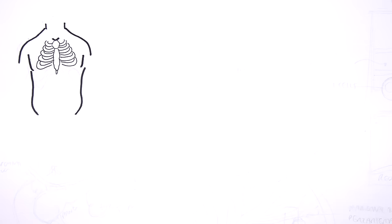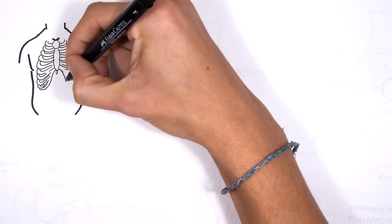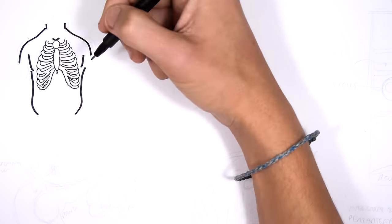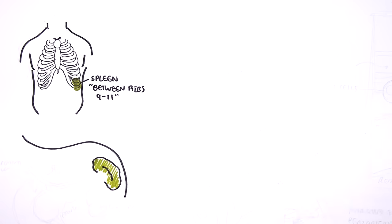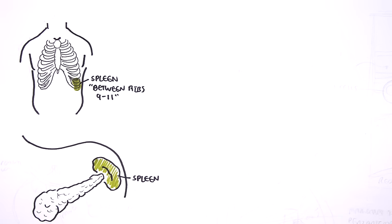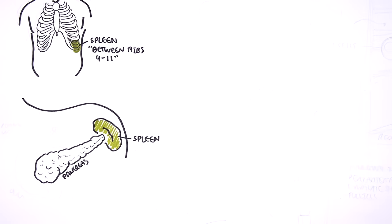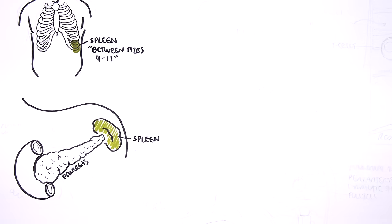The spleen is below our diaphragm on the left side. It's actually under our ribs, specifically between ribs 9 and 11. The spleen is an intraperitoneal organ, not a retroperitoneal organ, and it lies in the left upper quadrant under the diaphragm. The tail of the pancreas also tickles the spleen, and the left kidney is below the spleen.